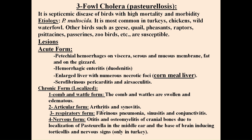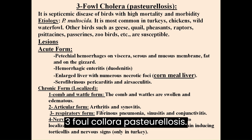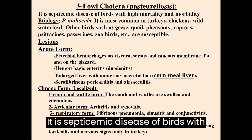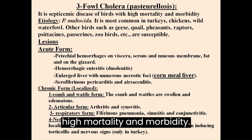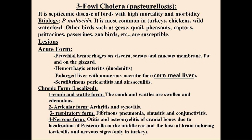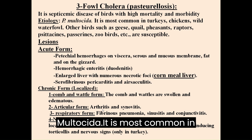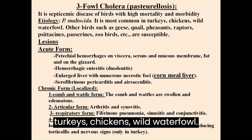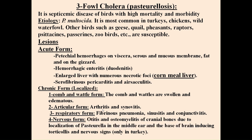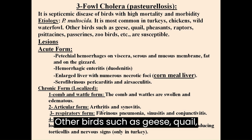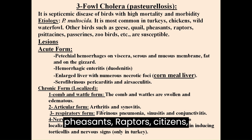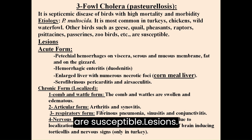Fowl Cholera (Pasteurellosis): enlarged liver with necrotic foci. This is a septicemic disease of birds with high mortality and morbidity. Etiology: Pasteurella multocida. Most common in turkeys, chickens and wild waterfowl. Other susceptible birds include geese, quail, pheasants, raptors, psittacines, passerines and zoo birds.